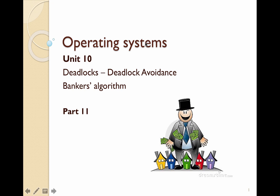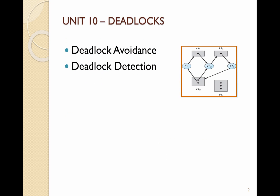Welcome to operating systems unit 10 part 2 on deadlocks, deadlock avoidance, and the banker's algorithm. In deadlock avoidance, processes use resources and share different instances of different resources. Processes need to indicate which resources they need, and the operating system must make choices on how to allocate resources to processes while keeping the system in a safe state.